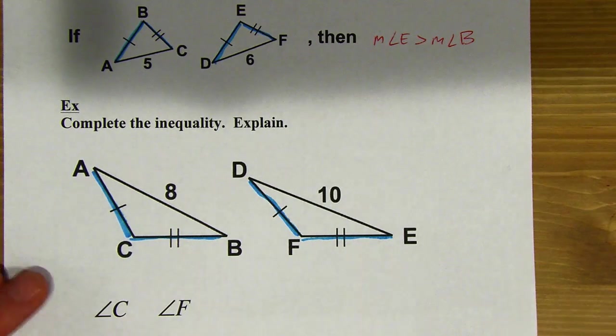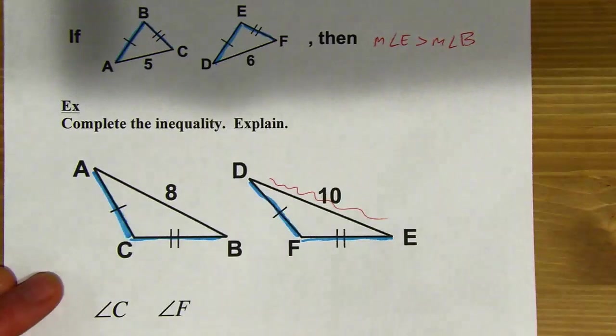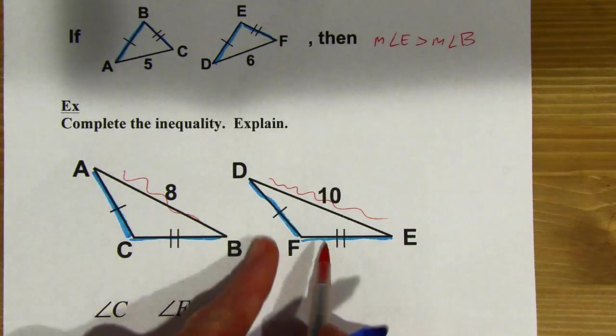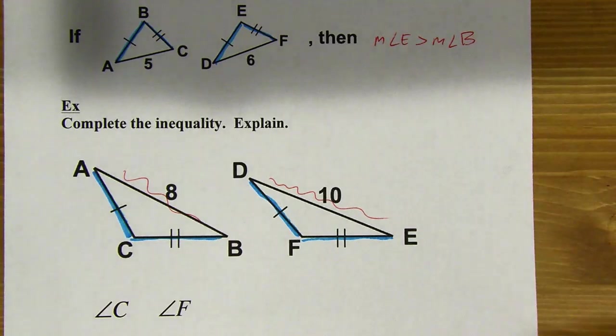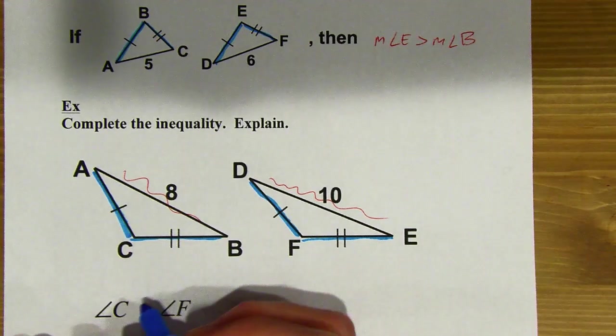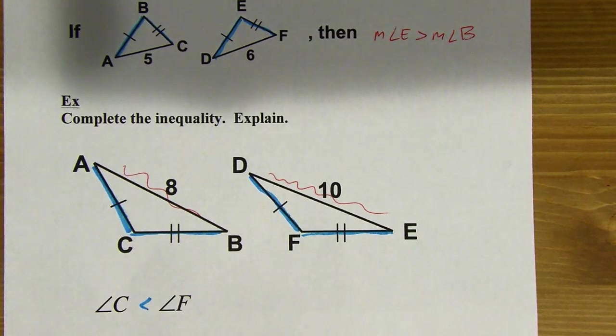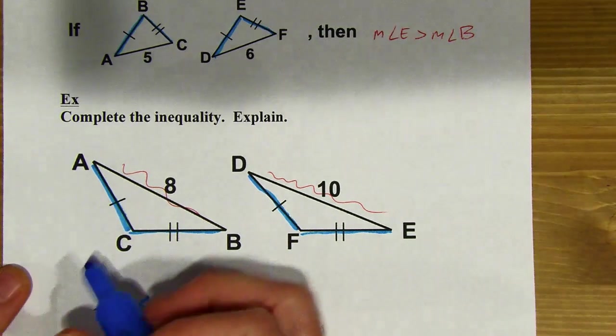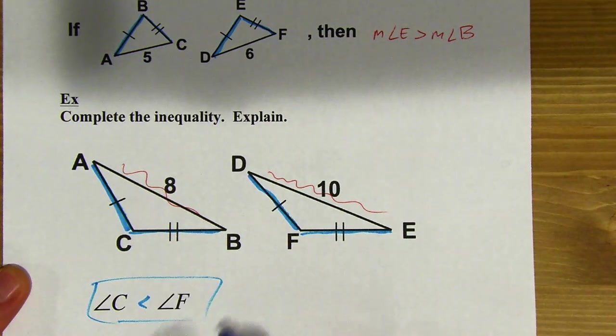So I wouldn't want to measure these with a protractor or just eyeball. But what I can do is look, well, hey, 10 is greater than 8. So that means that this hinge is open wider. So that means that F, the measure of angle F, is greater than the measure of angle C. Or you could say angle C is less than angle F. And there is my answer.